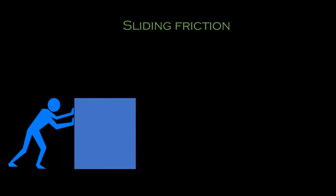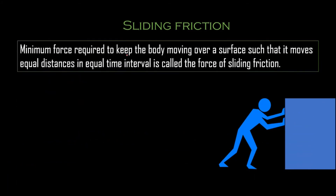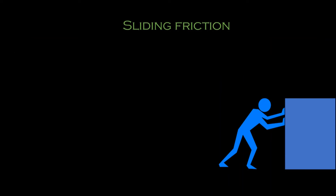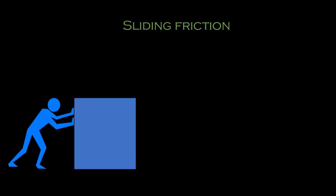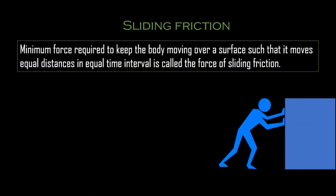Sliding friction is the minimum force required to keep the body moving over a surface such that it moves equal distance in equal intervals of time. This is called the force of sliding friction. Once the body has started moving, it travels in a very smooth fashion — equal distance in equal intervals of time.